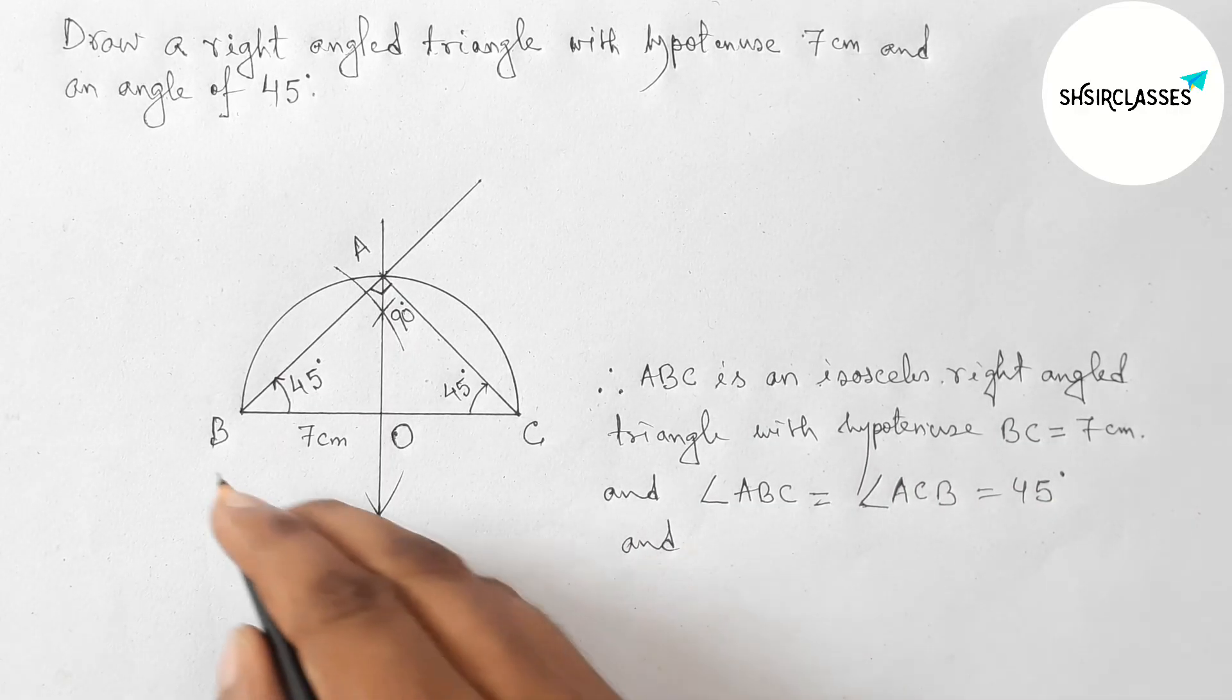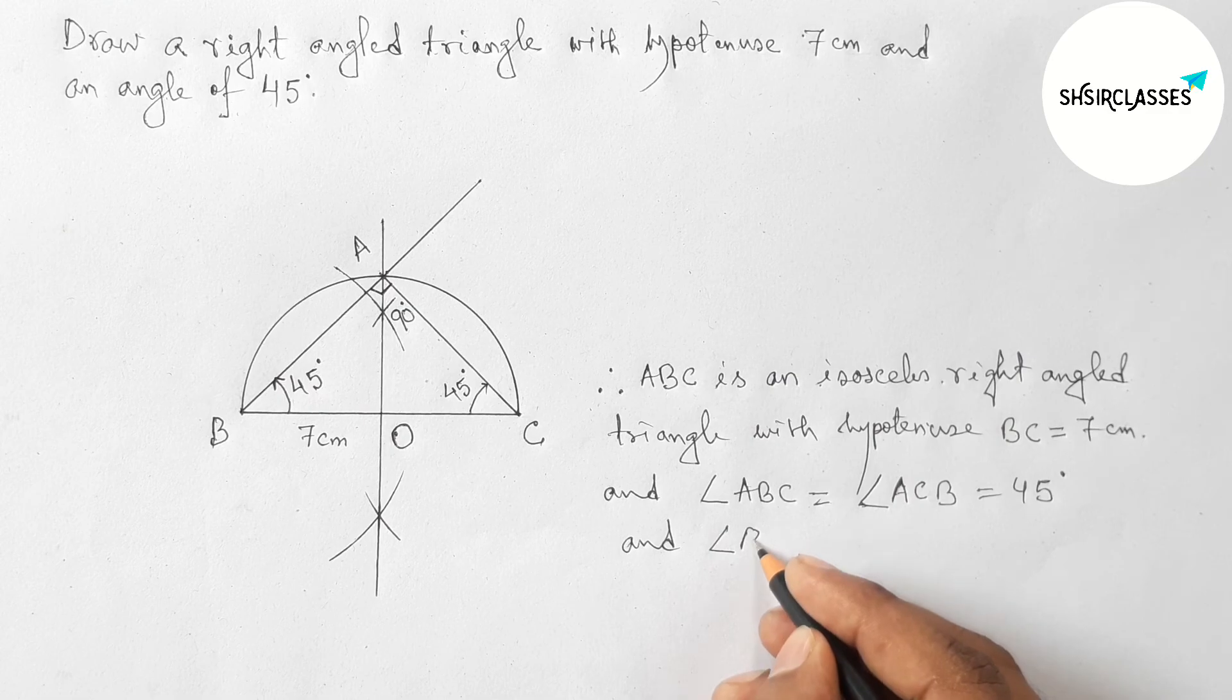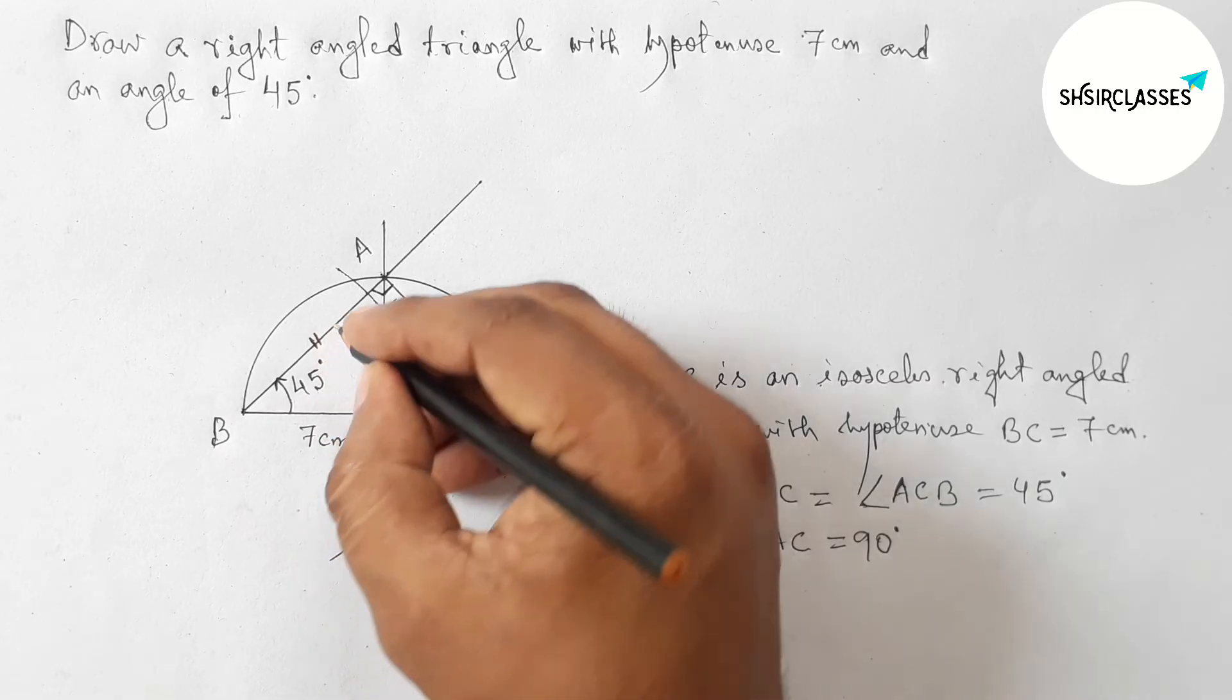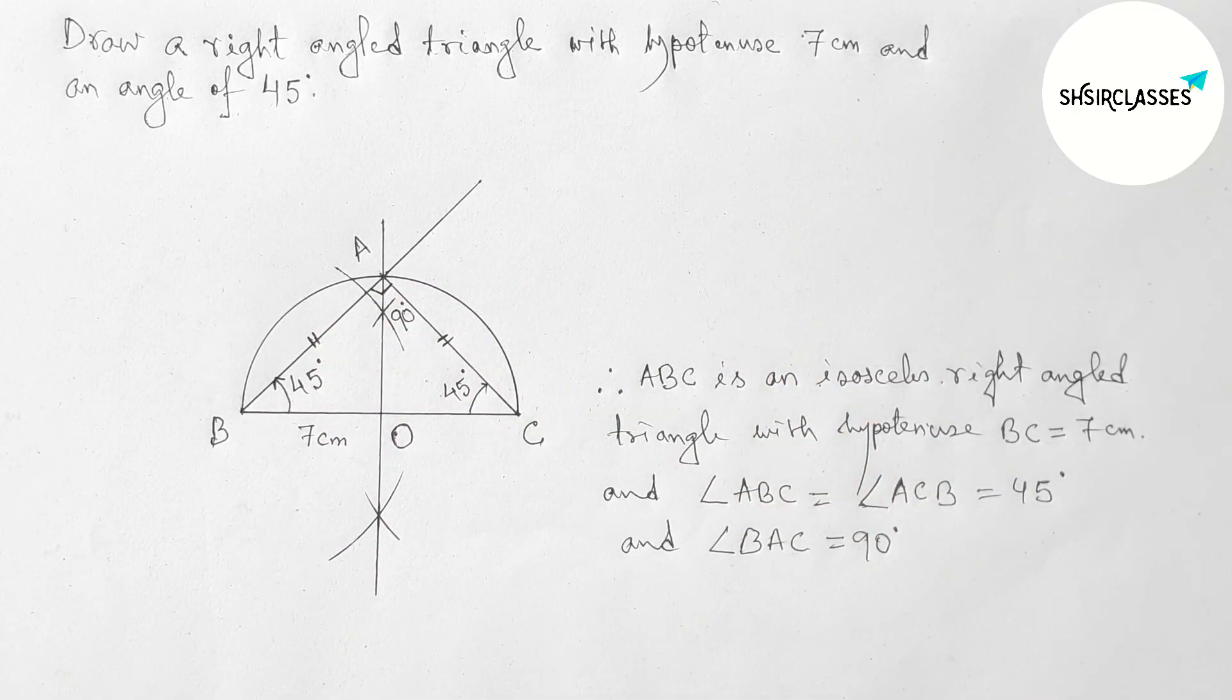And angle BAC equals 90 degrees or right angle. So that's all. Thanks for watching. If this video is helpful to you, then please share it with your friend and marking the equal symbol on both sides.